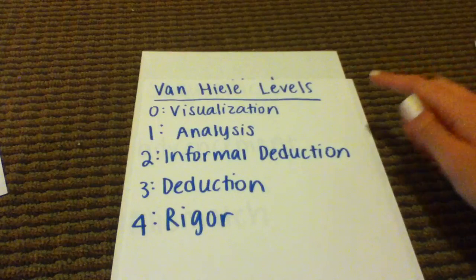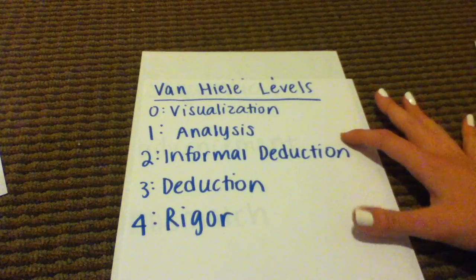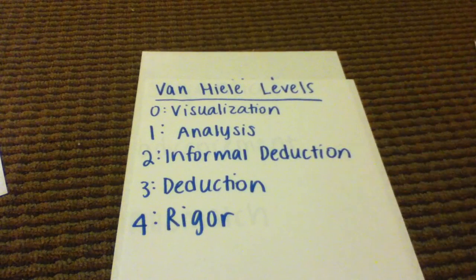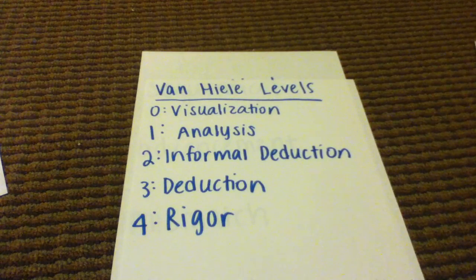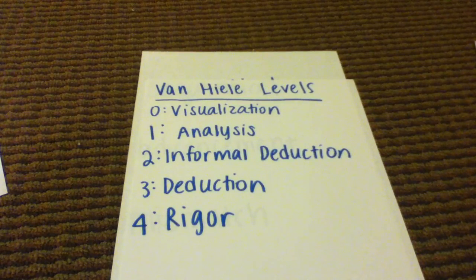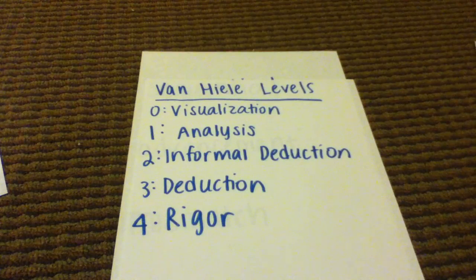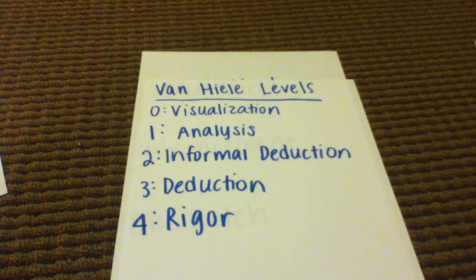The next level is level two: informal deduction. This is when students start to see more in-depth relationships between properties of a class of shapes. For example, they could say 'a square is a rectangle because it has all the properties of a rectangle.' They start using geometric definitions and get more in-depth with relationships between properties.